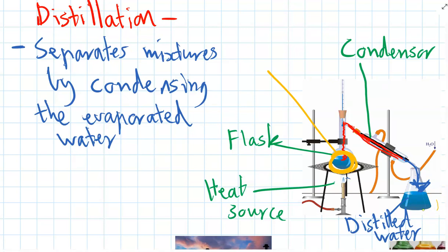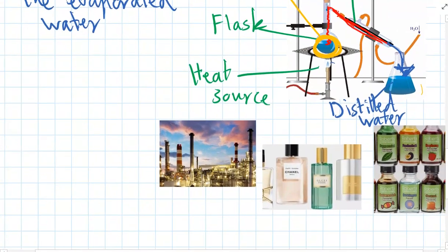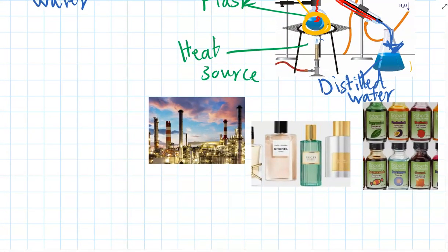This is the basic method of distillation, but distillation is used in lots of different areas. It's used to separate all the different chemicals that are found in oil, so at oil refineries. And that's how we can get petrol for cars and how we can get kerosene to fly aeroplanes and how we can get natural gas as well.